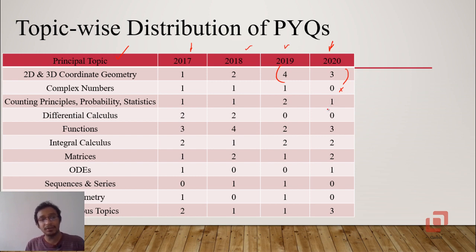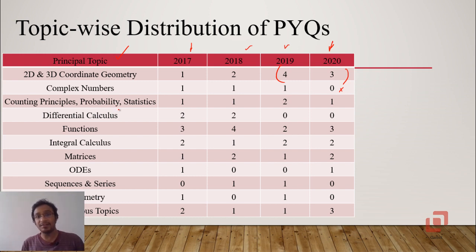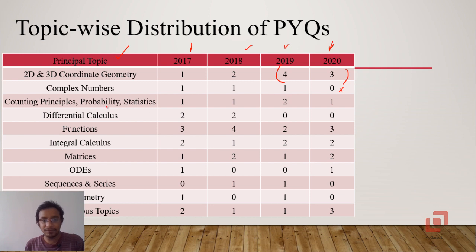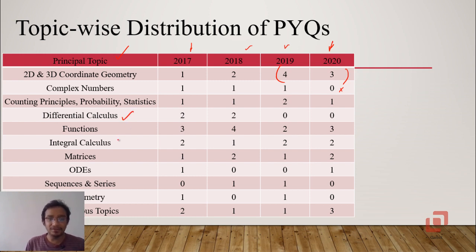For counting principles — permutations and combinations — and discrete probability and statistics including the addition theorem, multiplication theorem, Bayes' theorem, odds, and probability distributions, you can expect at least one or two questions from counting principles and one question from either probability or statistics. The calculus part — differential calculus, integral calculus, functions, and ODEs — forms the core.